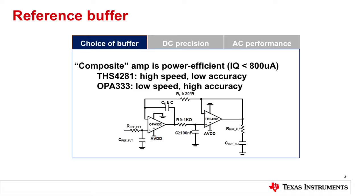The composite amplifier is a well-known topology in the industry, but you have to be careful when implementing it. The choice here is to combine a precision amplifier with a high-speed amplifier — namely the OPA333 with the THS4281 — to get the best of both worlds. The OPA333 gives you low power consumption and the best available precision, while you might ask how the THS4281's precision compares — it doesn't — but that's addressed by the topology.